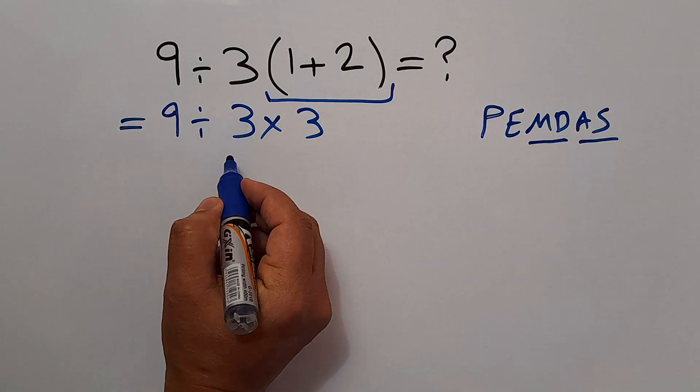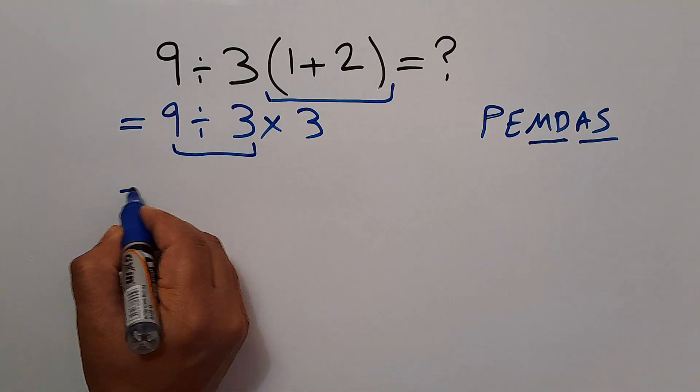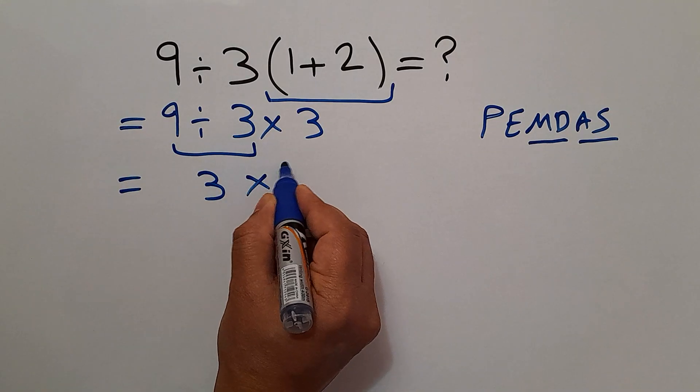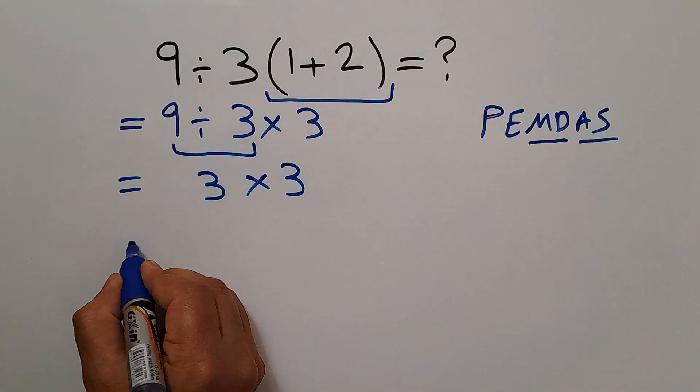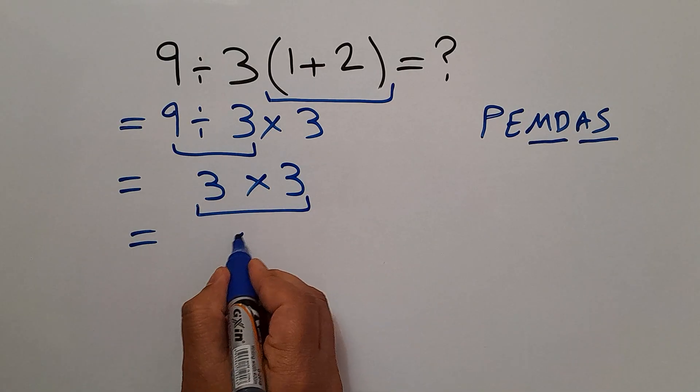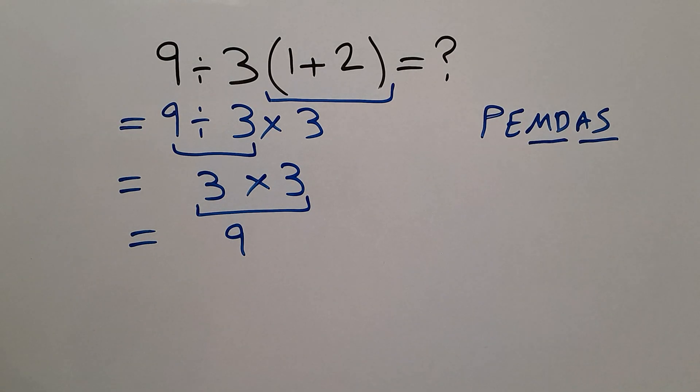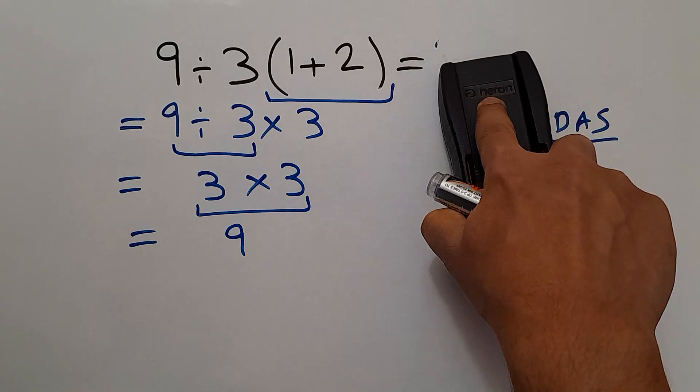9 divided by 3 equals 3, and 3 times 3, which equals 9. So, our final answer to this problem is just 9.